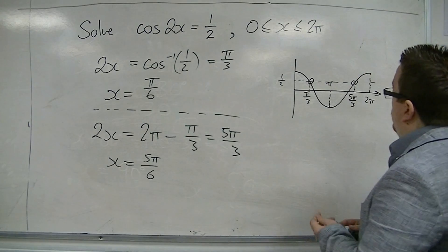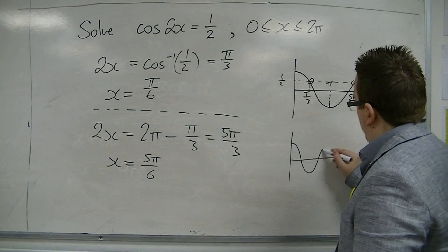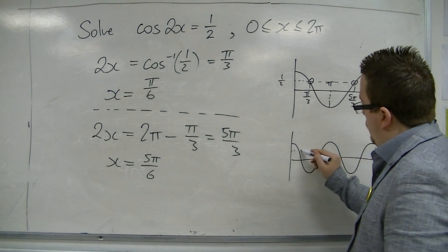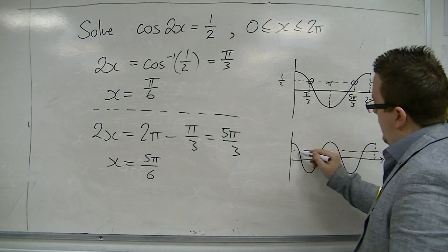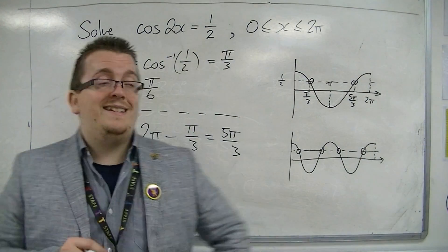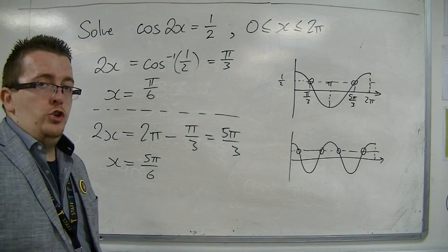So between 0 and 2 pi, if I actually sketched it, we're looking at this. So 0.5 actually intersects in 4 distinct places between 0 and 2 pi, and so there are 4 solutions.